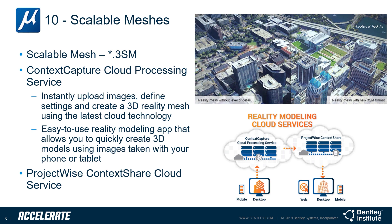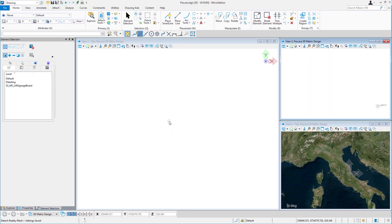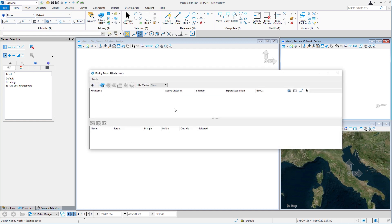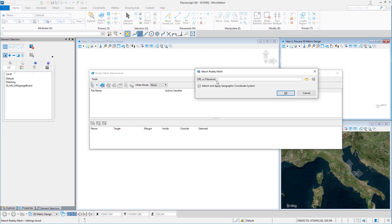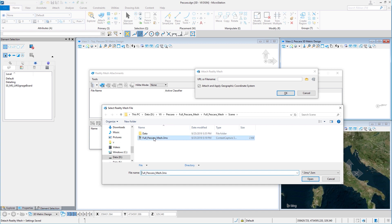Context Capture offers a cloud-based service to process those images into a 3D model. We also offer ProjectWise Context Share, a cloud-sharing service for storing, managing, and sharing reality data. Let's take a look at MicroStation. Reality mesh models, fully integrated into the MicroStation Connect Edition, can be opened directly — locally or via a URL — or they can be attached as references to existing models.